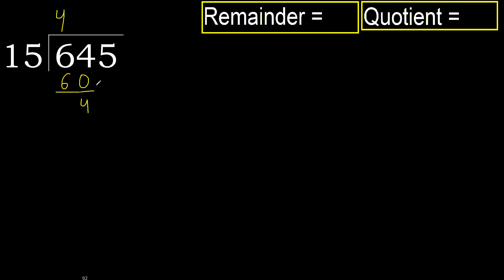Subtract, then next: 45. 15 multiplied by 3 is 45, which is not greater.